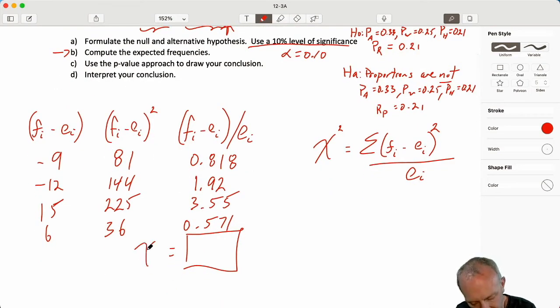Now we can add those up, 3.55, 1.92 and 0.818, that gives me finally my chi squared of 6.86. So not as tedious as some of the other calculations that we've done for chi squared but very, very familiar. I suspect you can see.